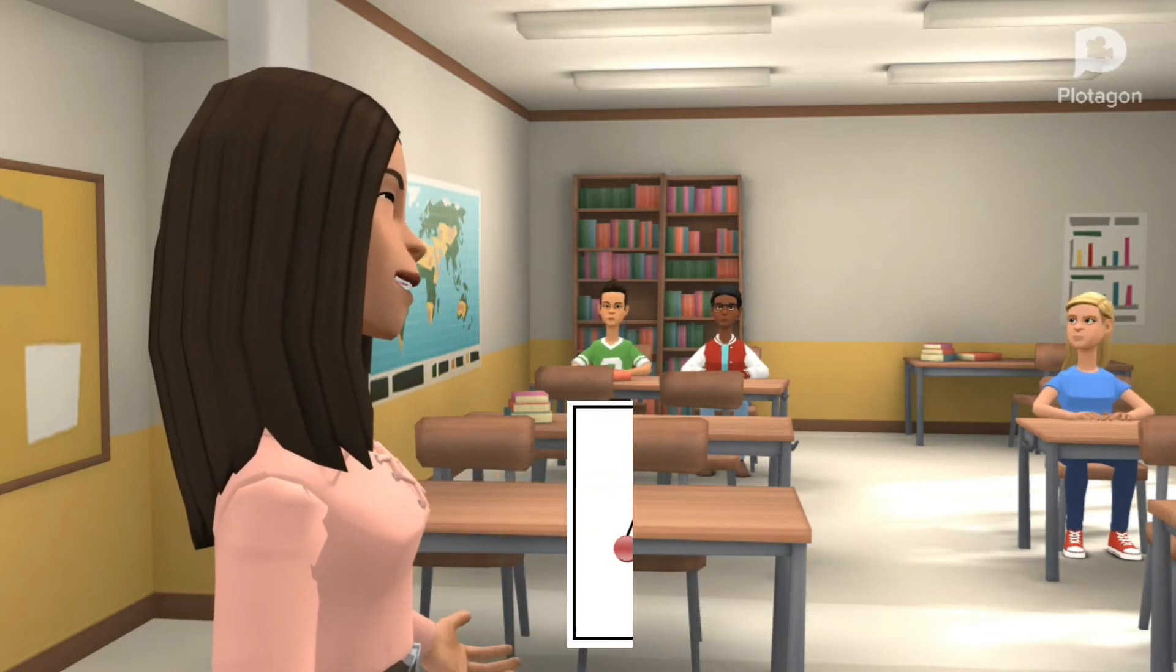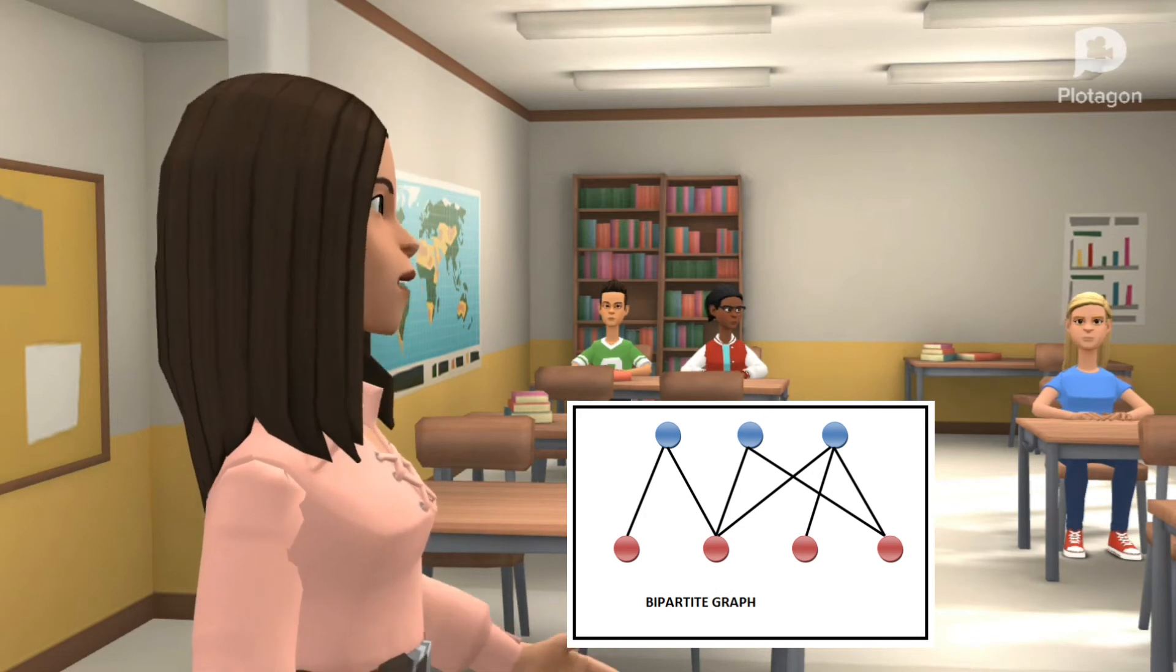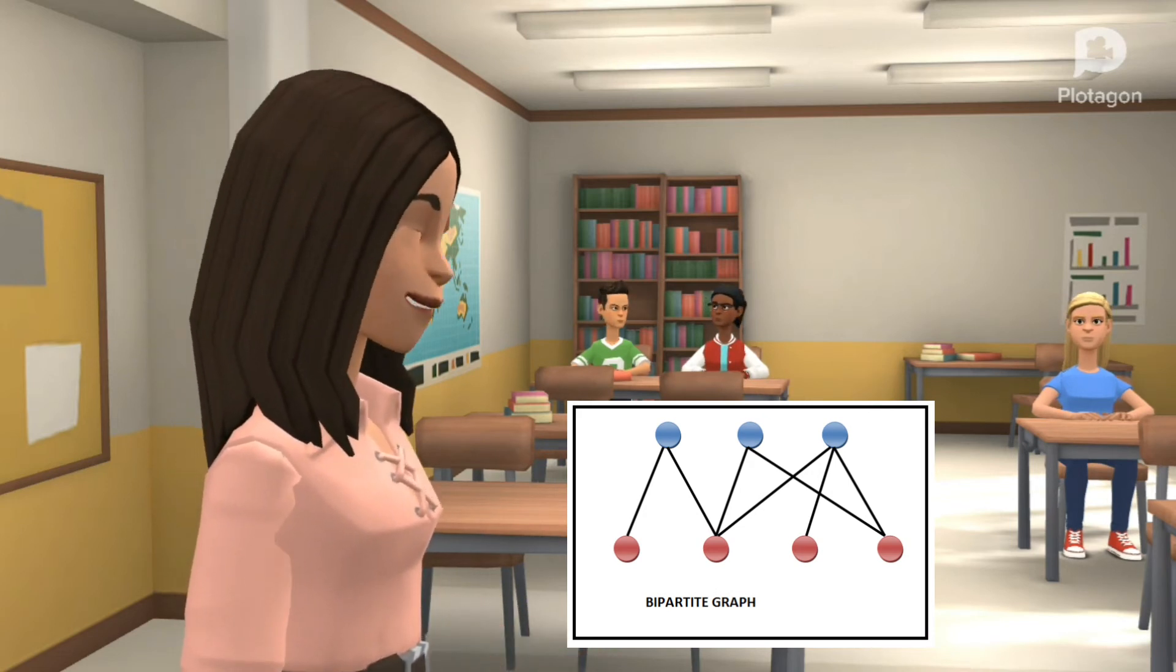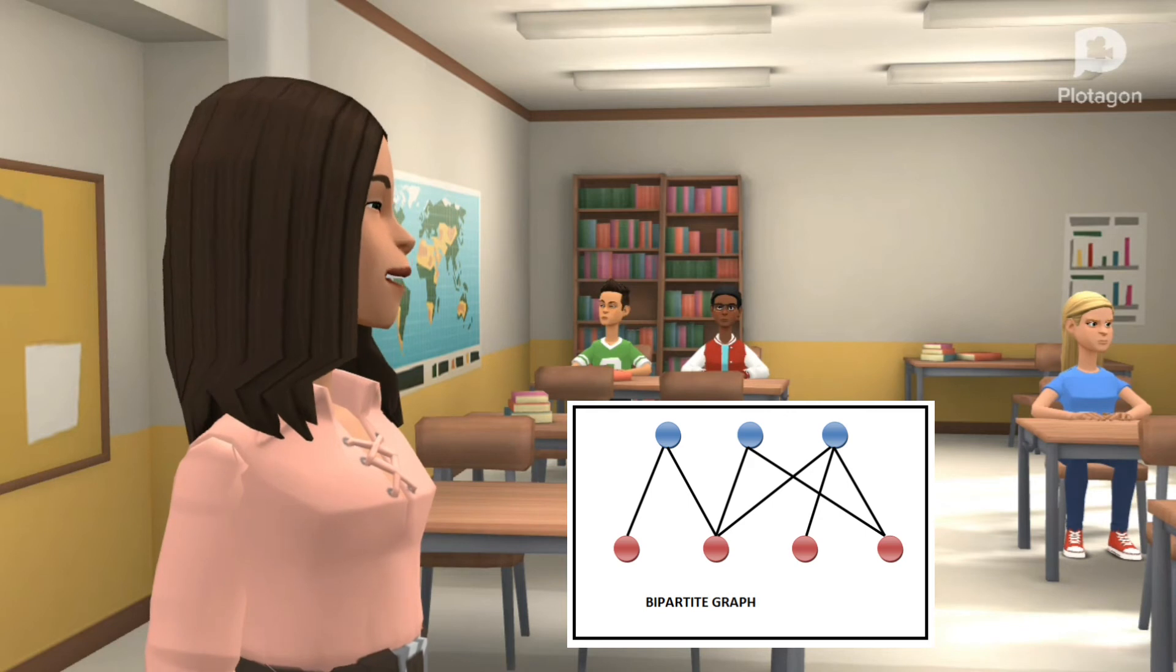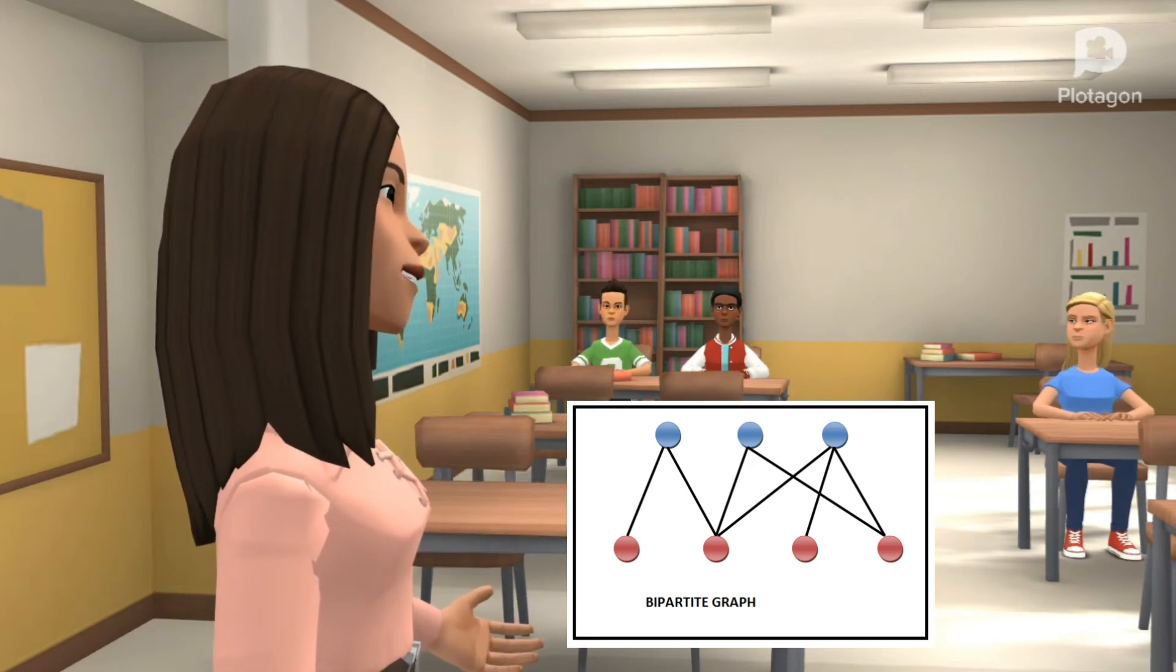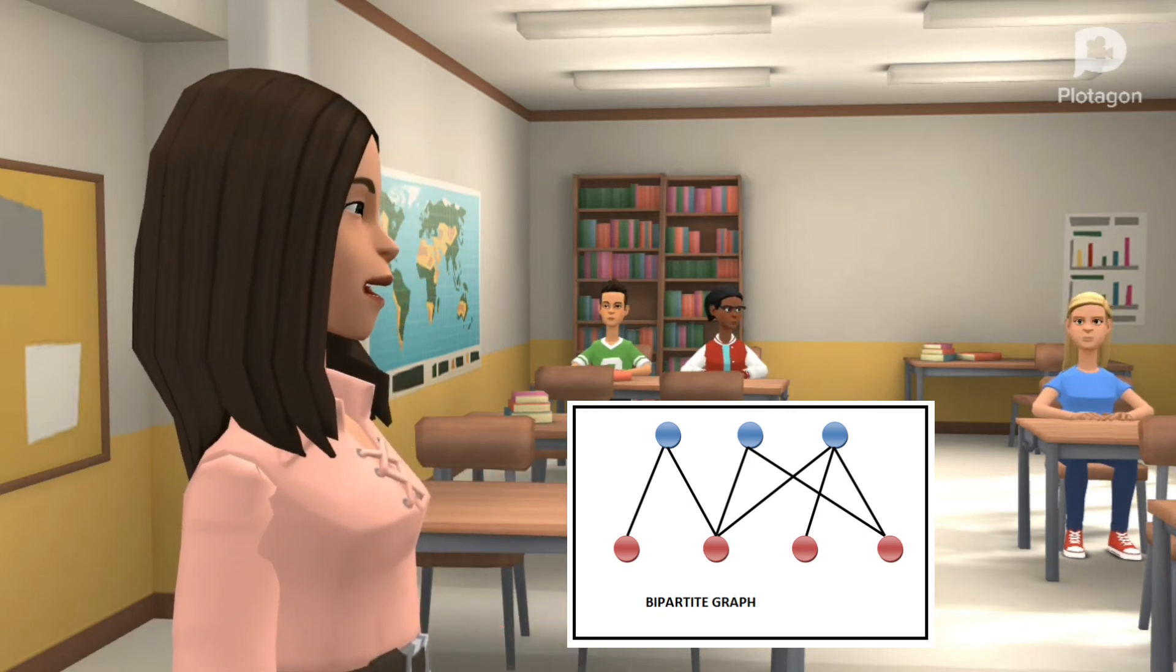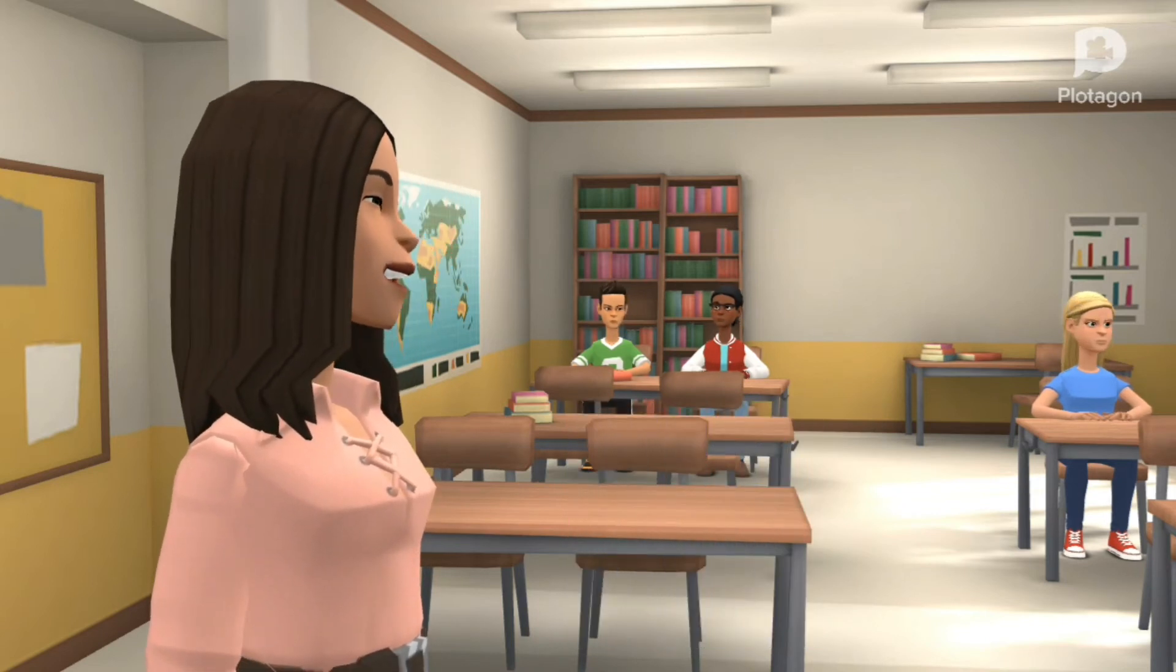Fourth, the bipartite graph. The graph G is said to be a bipartite graph if G(V), the vertex set, can be divided into two subsets V1 and V2 such that if there exists an edge in the graph, it connects one vertex from each of the sets.